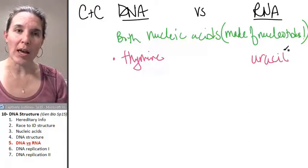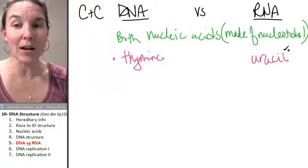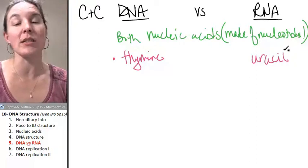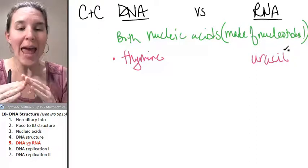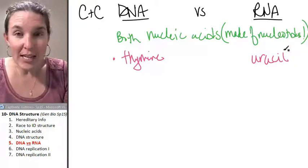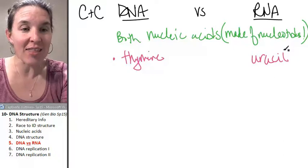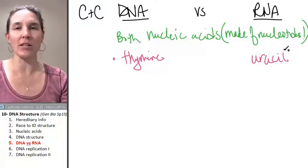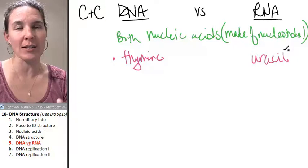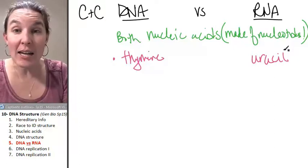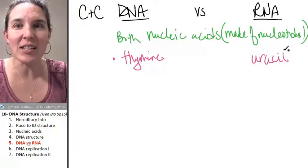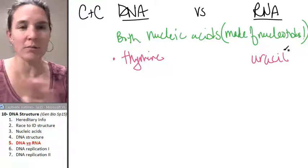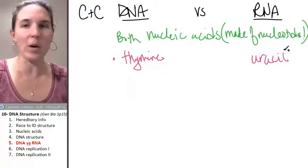If I threw out some nucleotides for you, you could look at them: any nucleotide that has a thymine in it, you would know that's a DNA nucleotide — done. Any nucleotide that has a uracil in it — done, that's an RNA molecule.